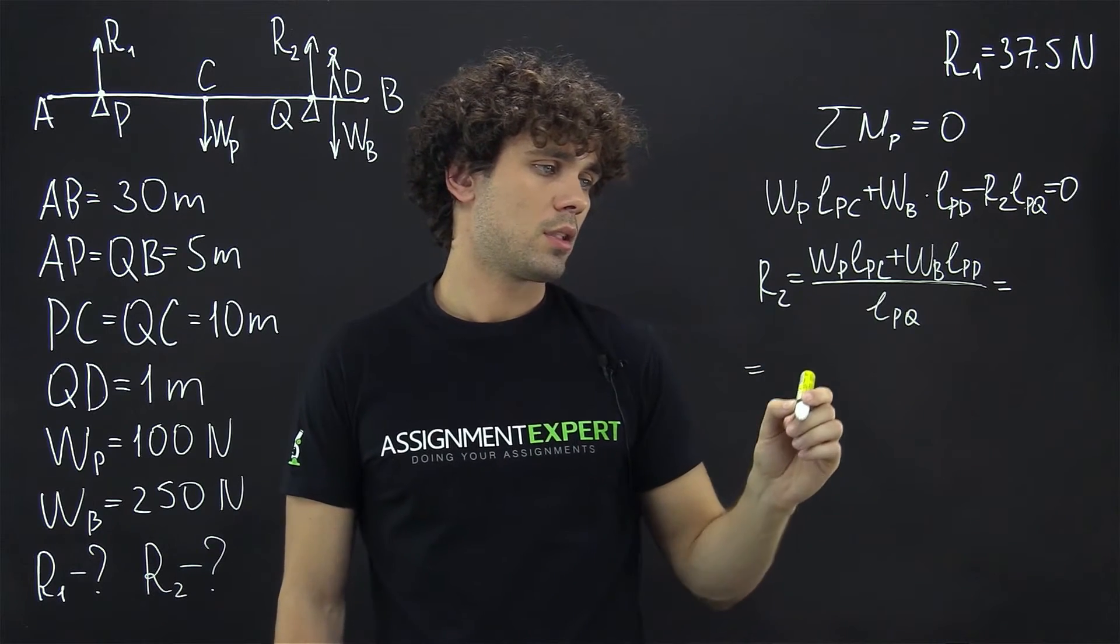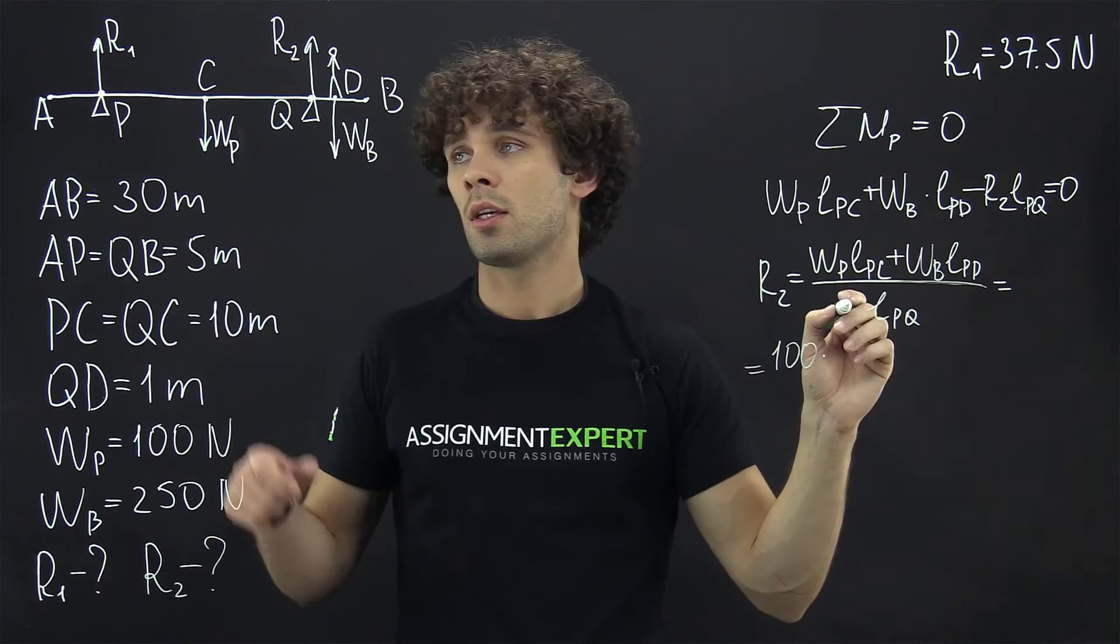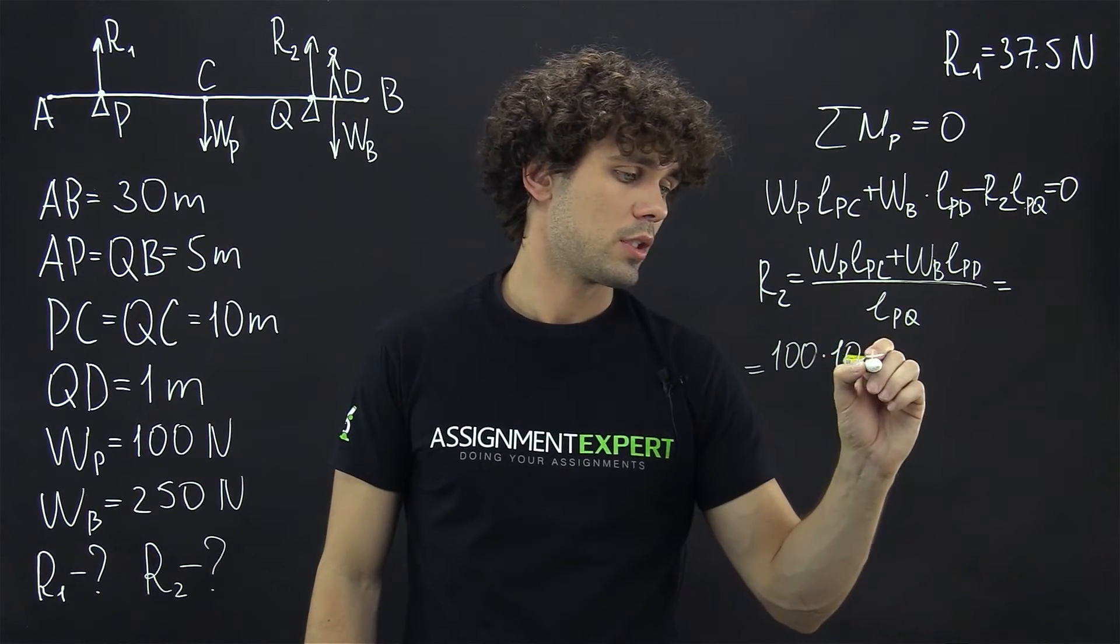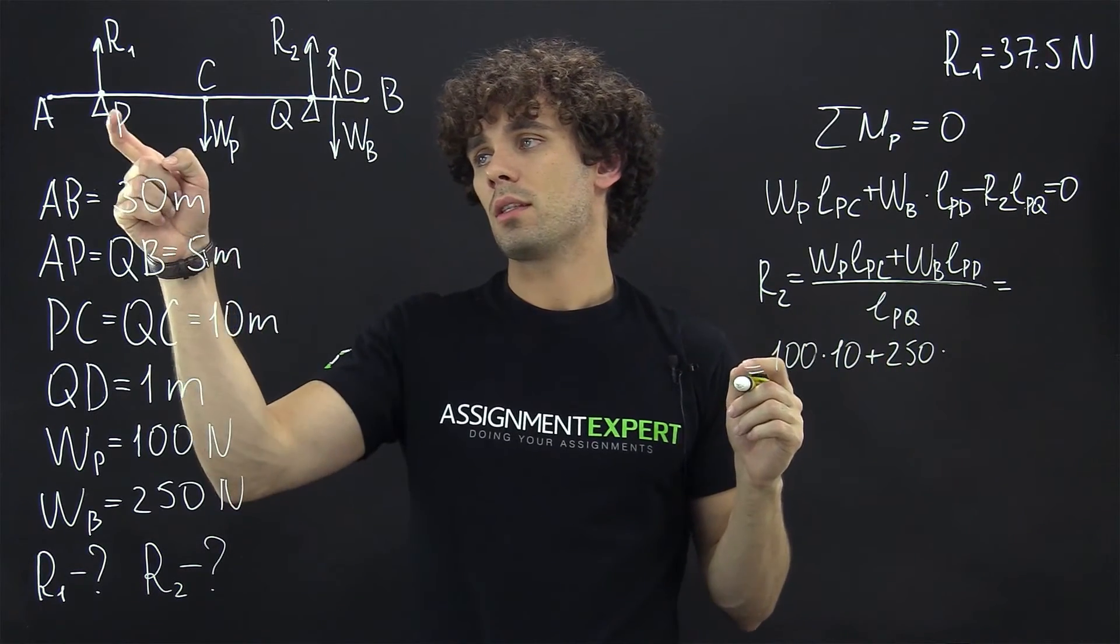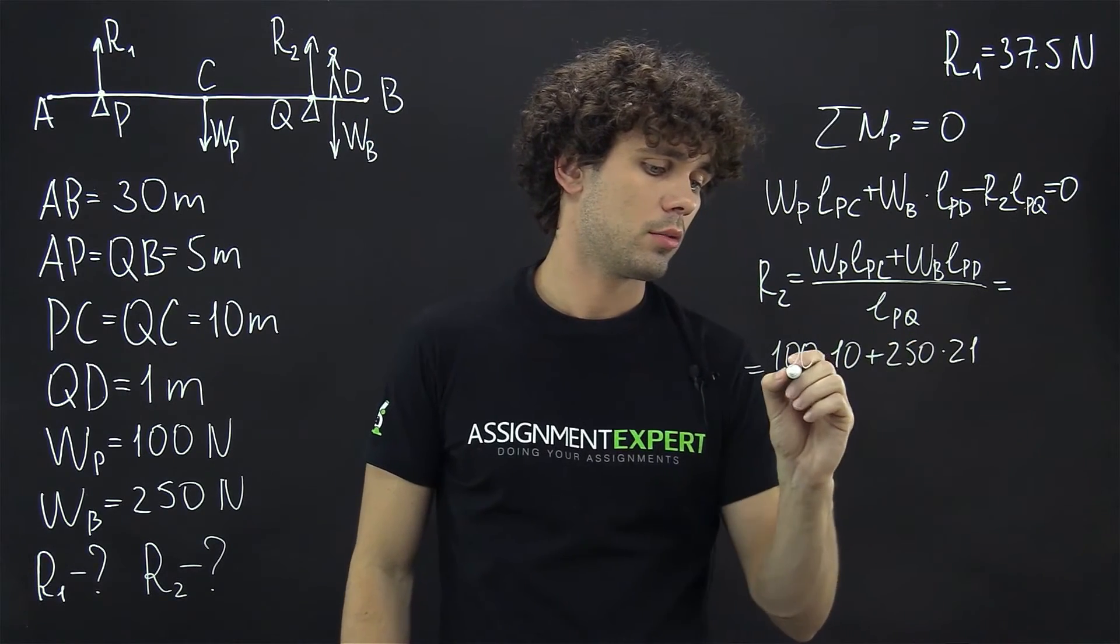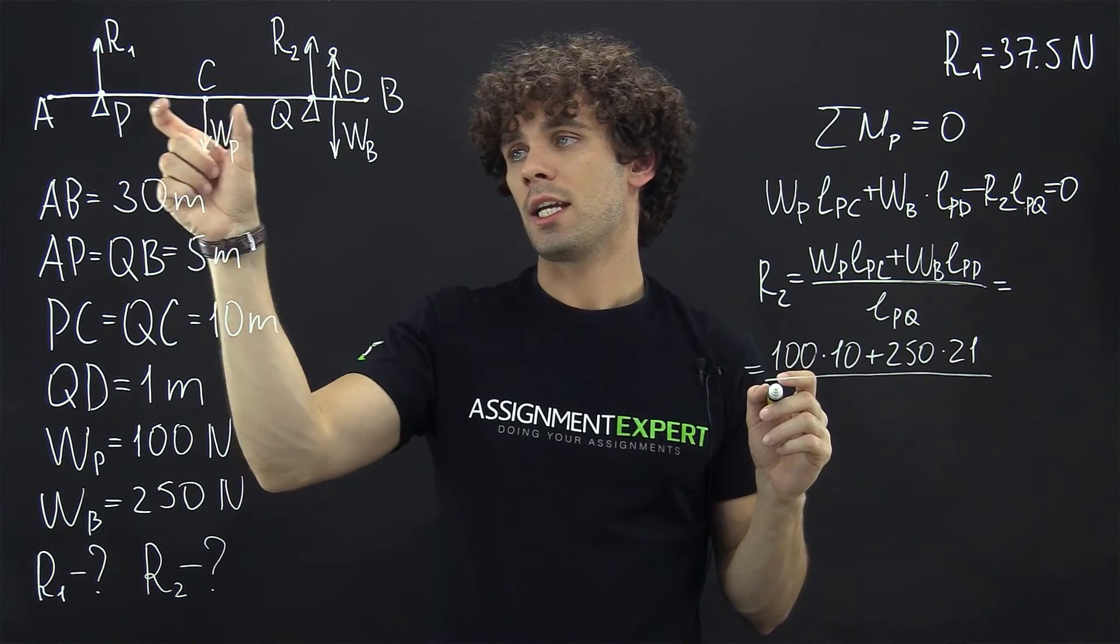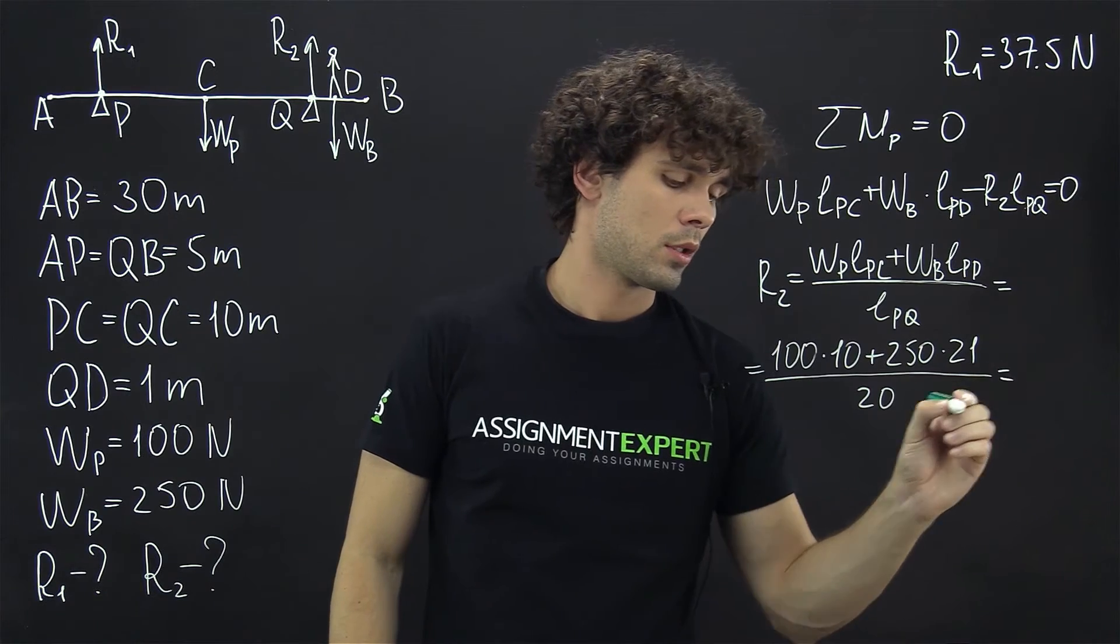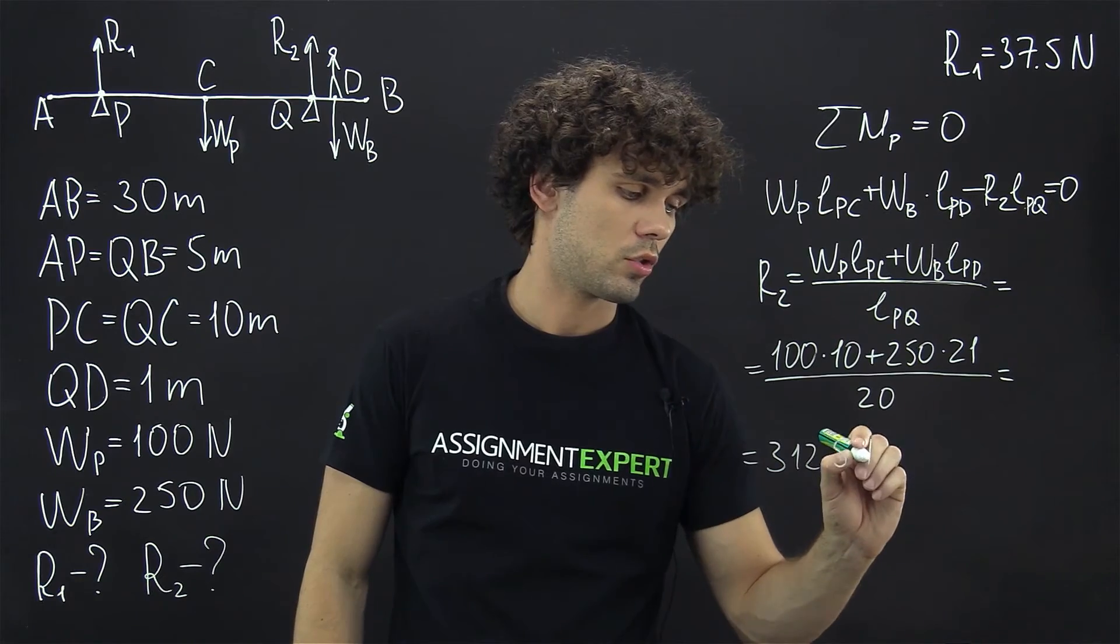And this gives us 100 times PC plus 250. And we have the distance LPD, which is 10 plus 10 plus 1. So we multiply by 21 and we divide by LPQ, which is 10 plus 10 and gives us 20. So the result is 312.5 newtons.